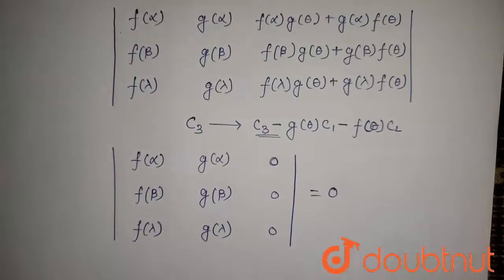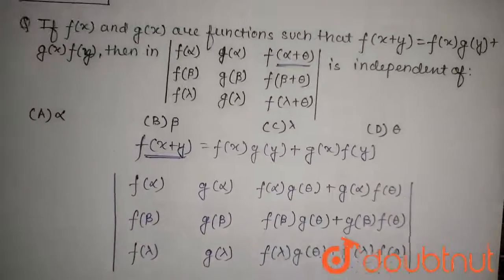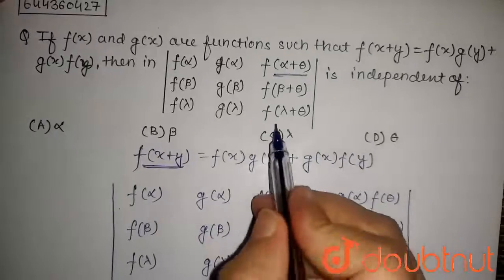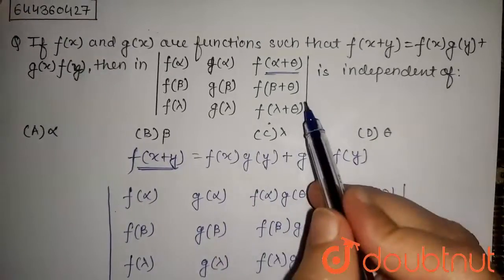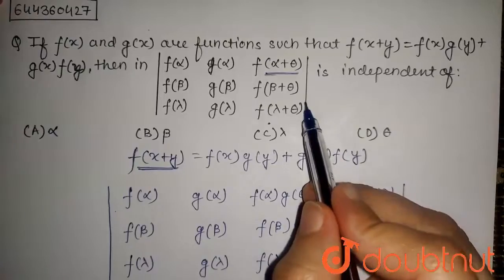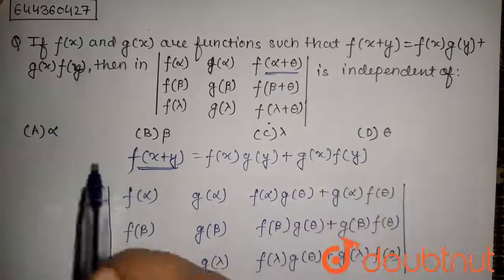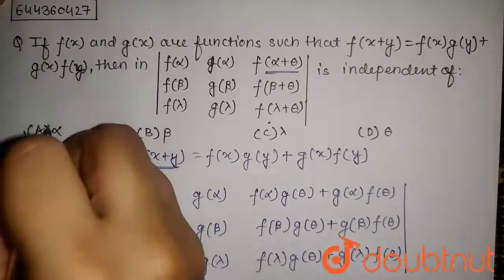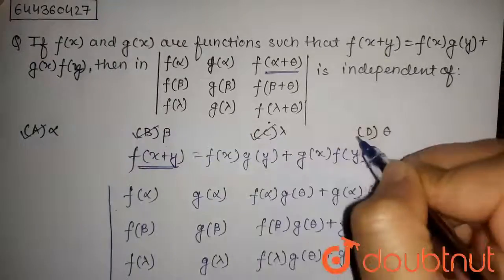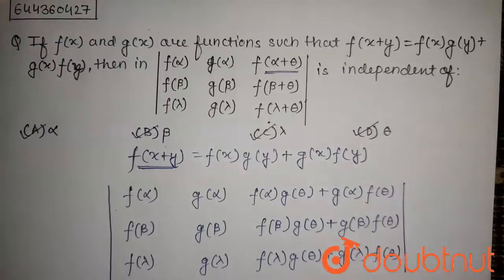So we have asked that the value of this determinant is independent of what. So as the value of this determinant is equal to 0, it is independent of alpha, beta, lambda and theta. So all of these options are correct. Thanks for watching.